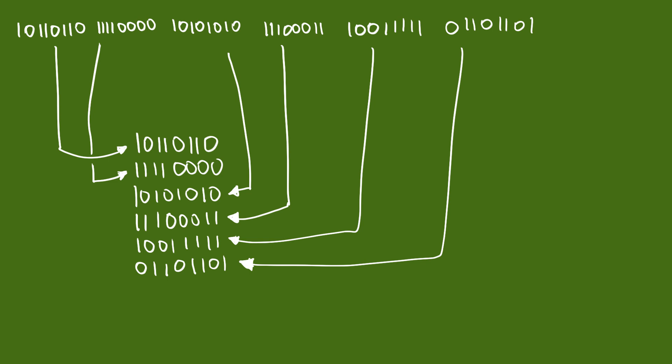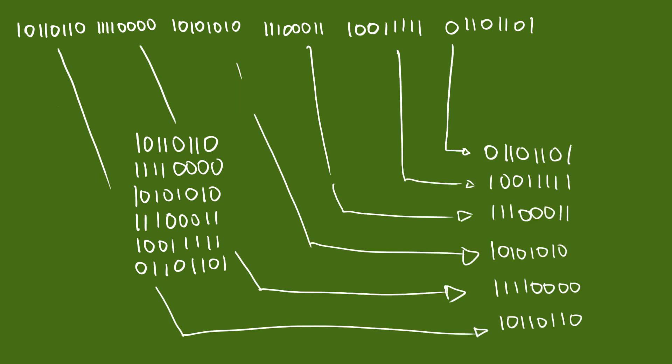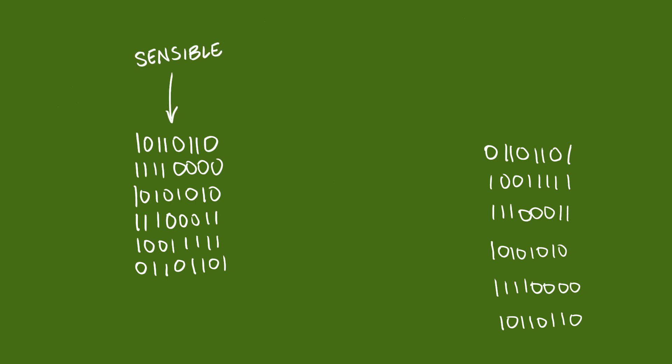But some people discovered that if they did things the other way around, putting the last byte in the first memory location, certain CPU operations could be done basically for free. So this way of doing things seems to be a little bit more sensible, and this way of doing things seems to be a little bit more efficient.